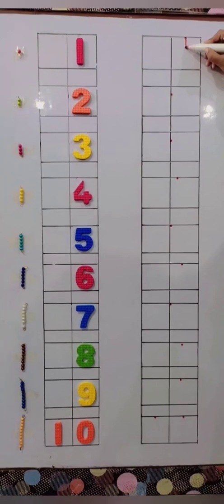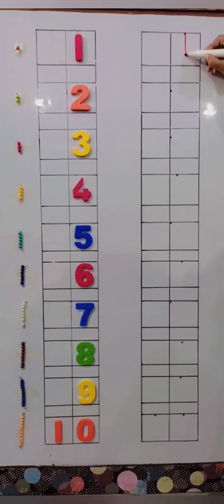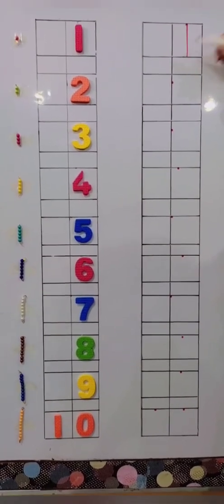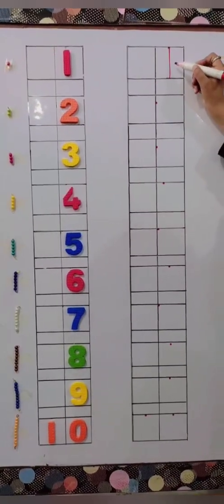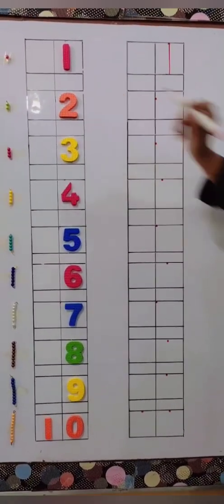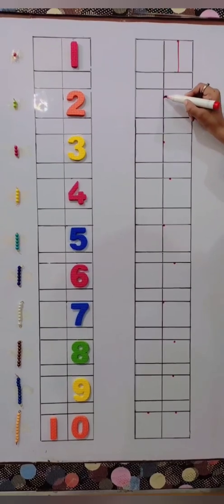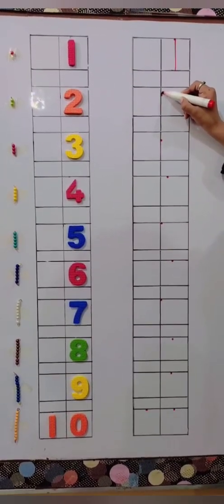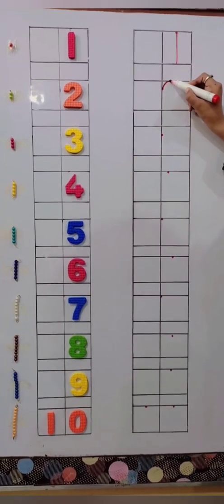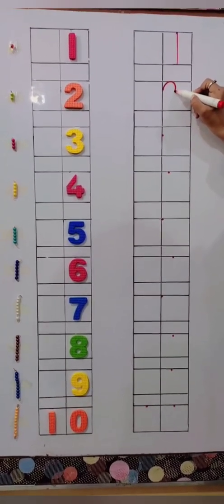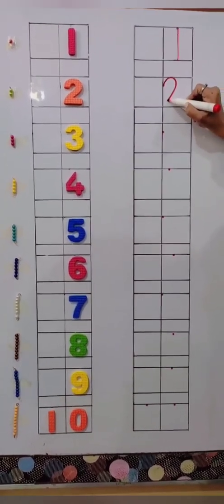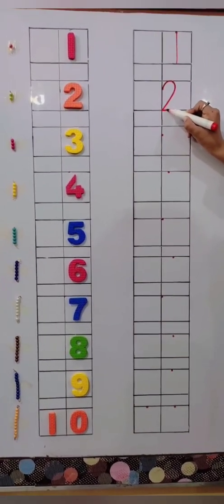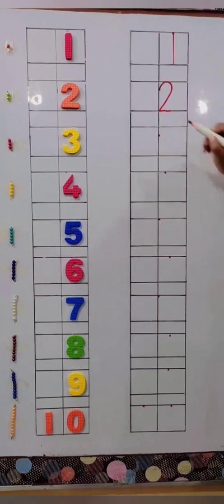1 is down and down. 1 is down and down. What's come after 1? 2. 2 must sit down. What is the formation of 2? 2 must sit down. Write with me with proper formation.